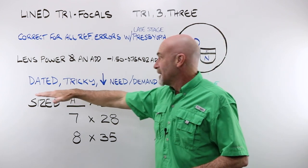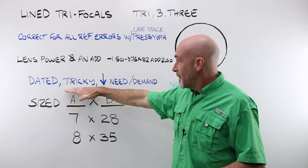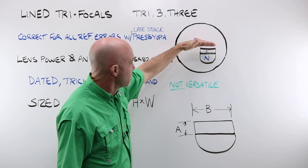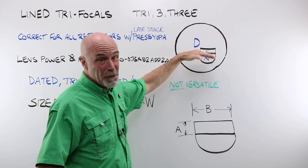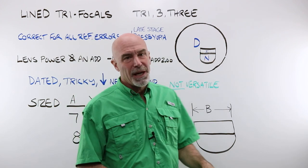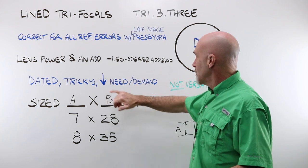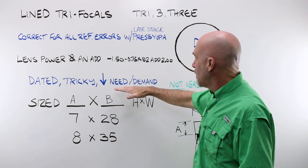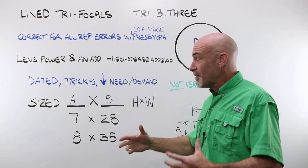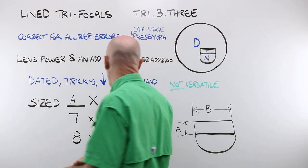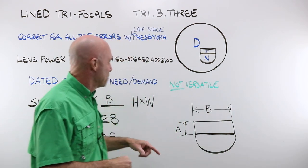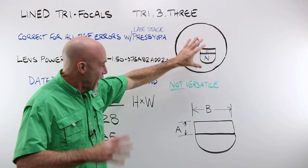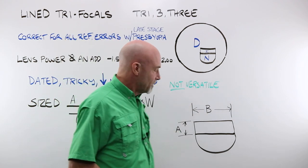A true trifocal design is a dated design. They are, were, more like it, tricky to work with. The positioning of this vertically in relationship to the eye, you had, you know, on a good day, about a millimeter of play before it was too high or too low. Really kind of tricky things to work with. Today, very, very low need, very, very low demand for these. Office progressives, good progressives in general, bifocals, changing the add power in a bifocal. There's a lot of ways around needing a trifocal design. Not that they're not out there, which is why we're going over this. They are unlike a lined bifocal, they are not versatile. You can't play much with the different powers behind it, different add powers, moving the segment around or anything. They're not very forgiving in their design.